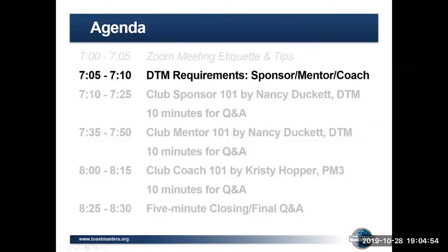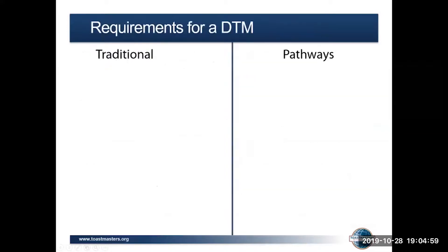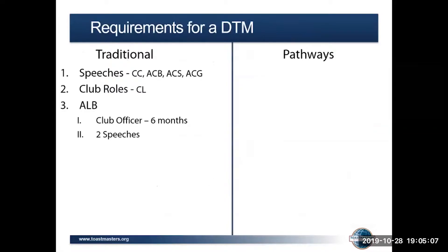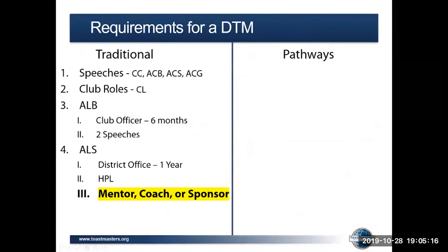Now we're going to talk about the DTM requirements for sponsor, mentor, and coach. In the traditional program, your DTM requirements included speeches: CC, ACB, ACS, and ACG. Your club roles were the CL, and the ALB — which required serving six months as a club officer and giving two speeches from the Better Speaking series. Your ALS required being a district officer for one year, completing an HPL, and doing a mentor, sponsor, or coach.